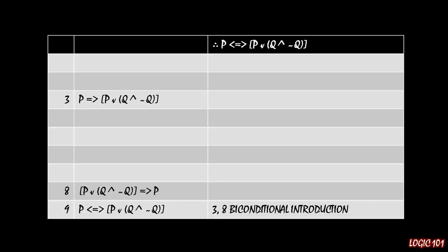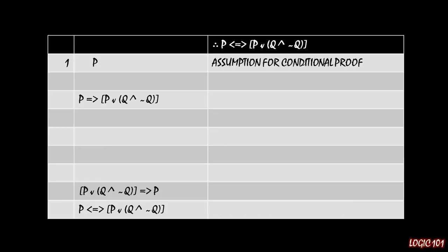So let's go ahead and start doing that for the first conditional statement, p implies p or q and not q. The way we use a conditional proof is to assume the antecedent is true. The antecedent here is p. And then the goal for the conditional proof is to show that if you assume that p is true, then the consequent must be true as well, p or q and not q.